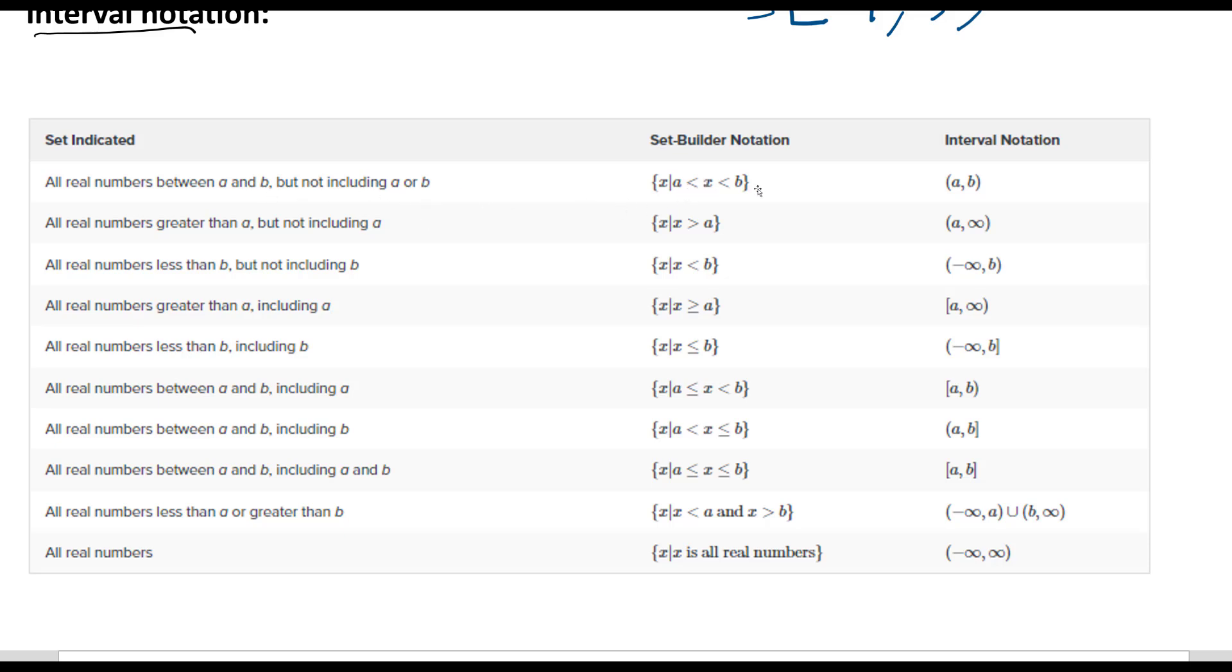So in set-builder notation, a is less than x less than b, x such that this happens. And in interval notation, we have the two parentheses: parenthesis a comma b close parenthesis. All the real numbers greater than a but not including a. So brace x such that - a vertical line such that x is greater than a - or in this case, a to infinity.